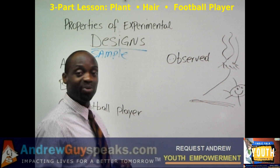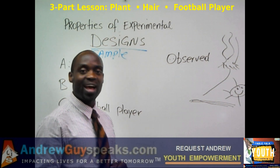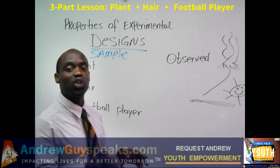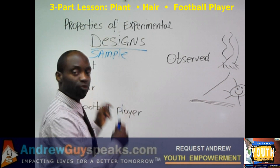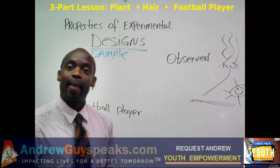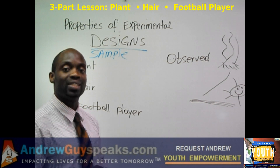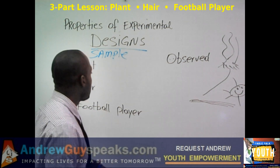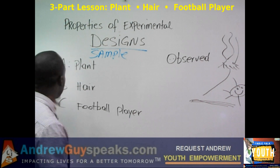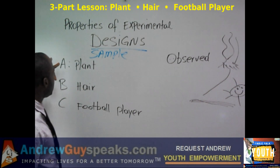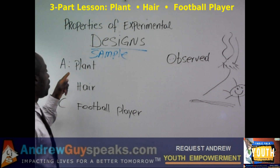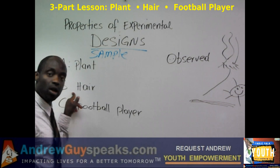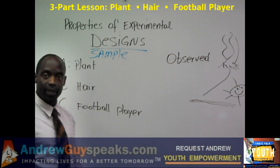Hey, this is Andrew, guys. Welcome back. We were talking about the properties of an experimental design, and we're going to do a sample for you. To recap, we said we're going to look at three different objects: A, B, and C — a plant, hair, and a football player.